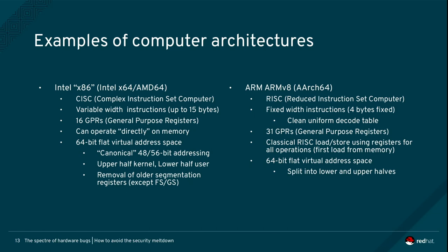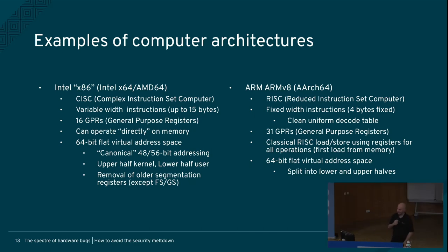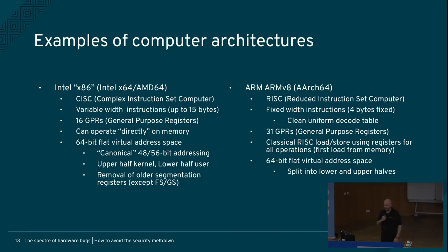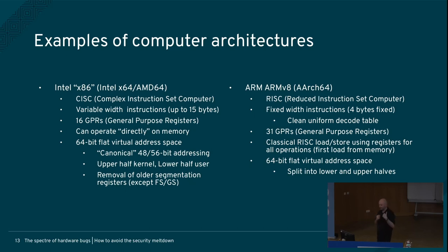Examples of computer architectures: Intel, of course — nearly everybody with a laptop is running an x86 laptop. It's a complex instruction set with a lot of history. Other examples would be ARM, particularly ARM V8, which powers most cell phones and tablets. These are two different architectures that compete in some ways but have many similarities: they both have registers, both operate on memory, and both load and store values before they use them.